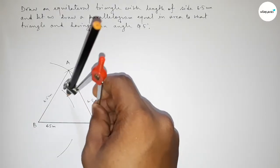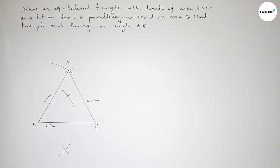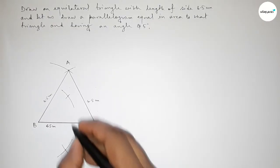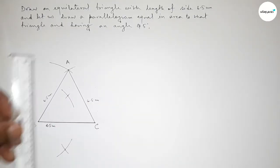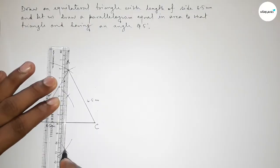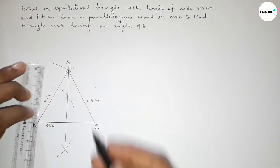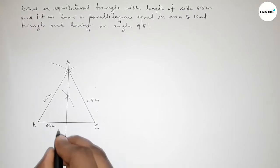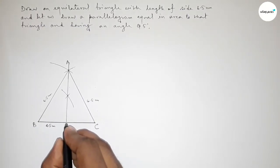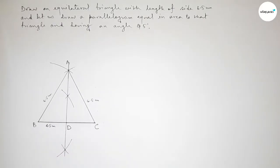Placing the compass with the same length and cutting arcs so both curves intersect at two points. Joining this line to get the perpendicular bisector of BC, and taking point D on that bisector.